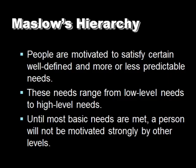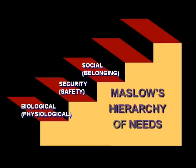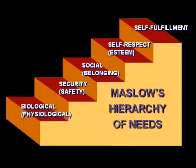Maslow's theory of motivation suggests that employees' needs are arranged in priority such that lower-order needs must be satisfied before higher-order needs become motivating. People must first have their biological or physiological needs met — basic physical needs include things like food, rest, shelter, and recreation. People cannot be motivated by other higher-level needs until their biological needs are met first.